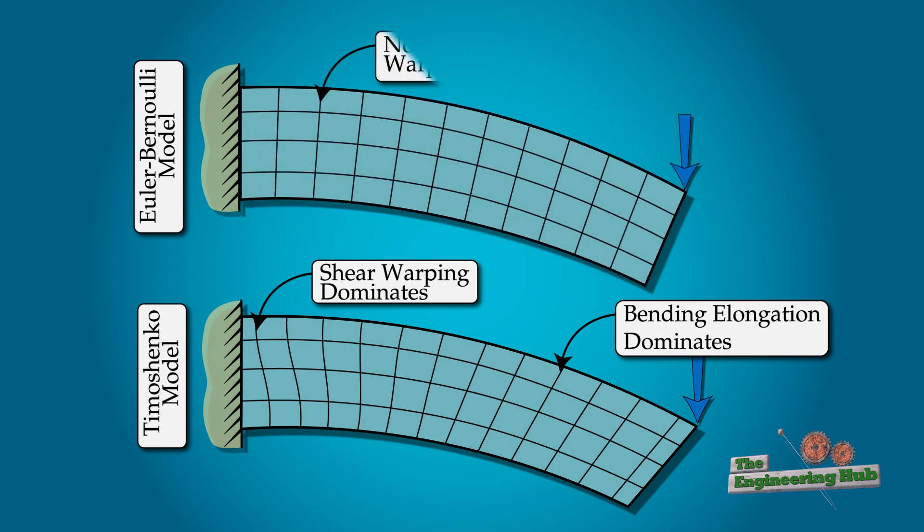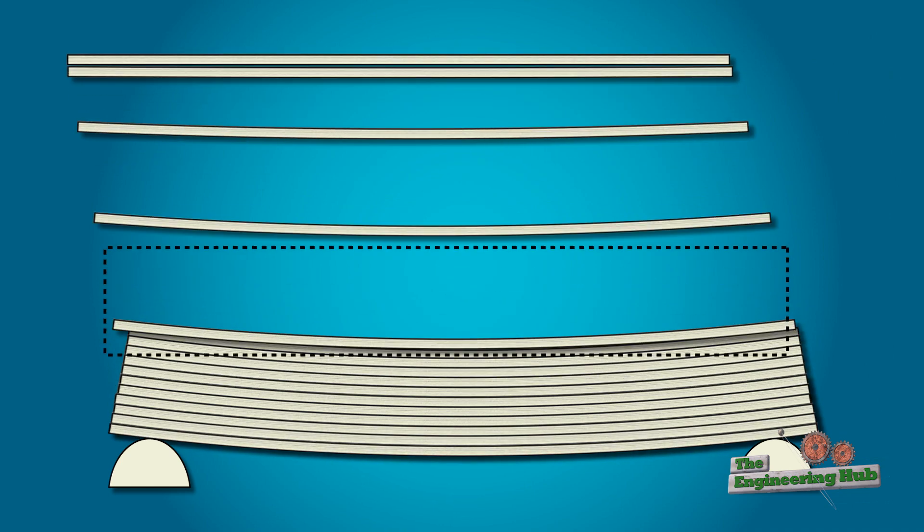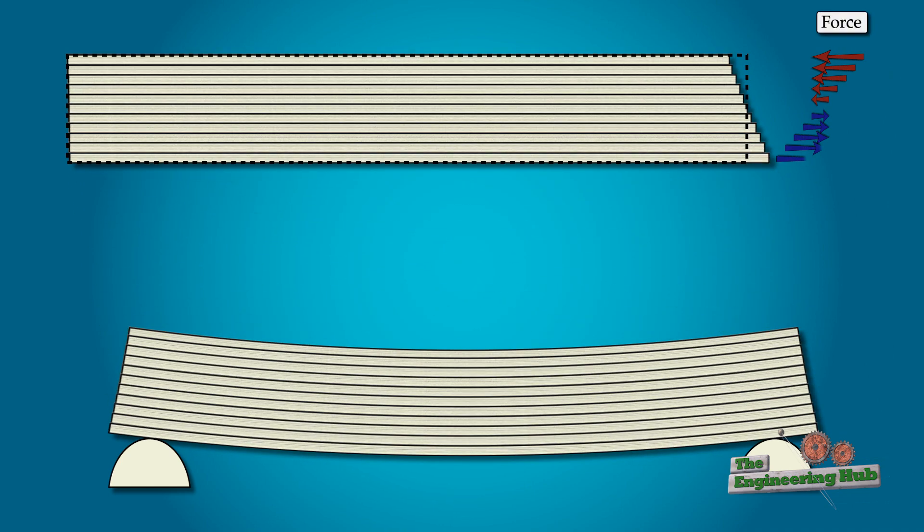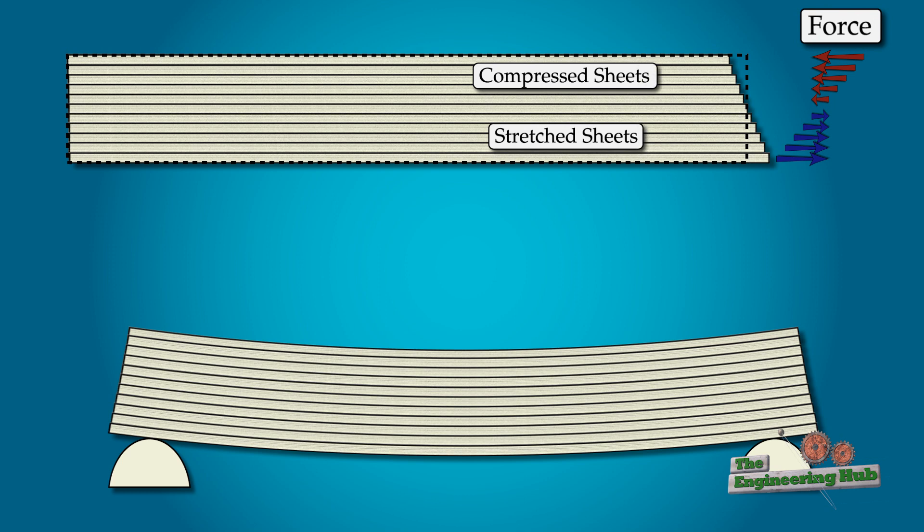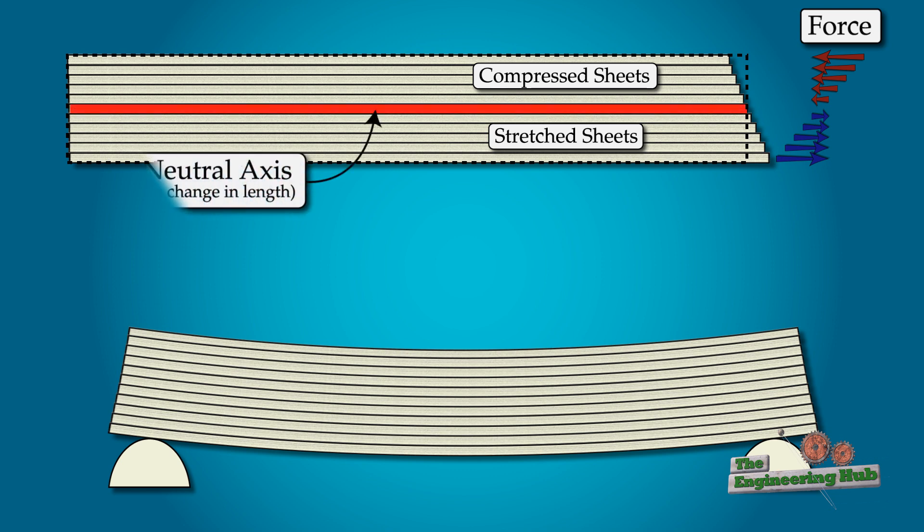The change in length of the sheets means that they must have been subjected to a longitudinal force. As shown, the change in length is not uniform across the beam's depth. As we move towards the middle of the beam, the change in length gets smaller and smaller until we reach the middle, also known as the neutral axis. The sheet at the neutral axis has not changed in length, which means it has not experienced any force.